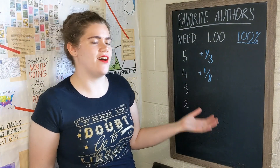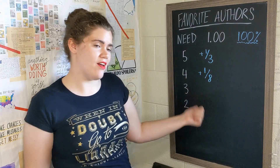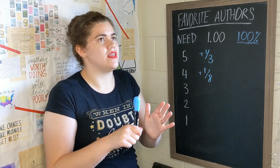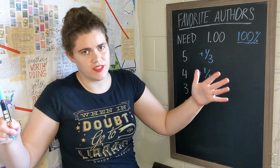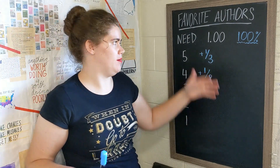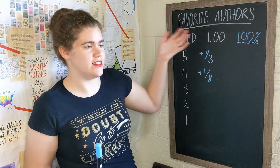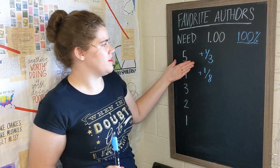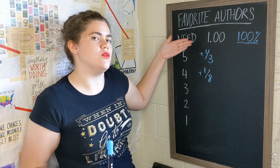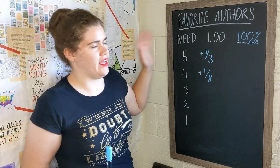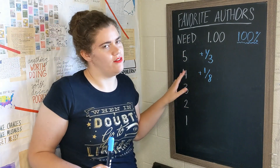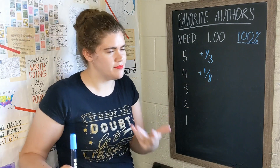A four-star book gets the author an eighth of a point, so you need eight four-star books to total up to favorite author status. Or you could do two five-star books and three four-star books.